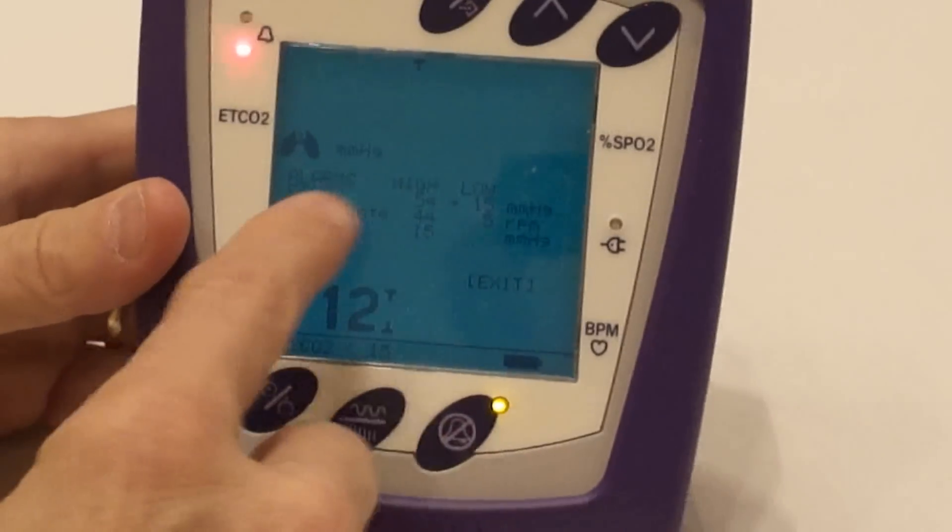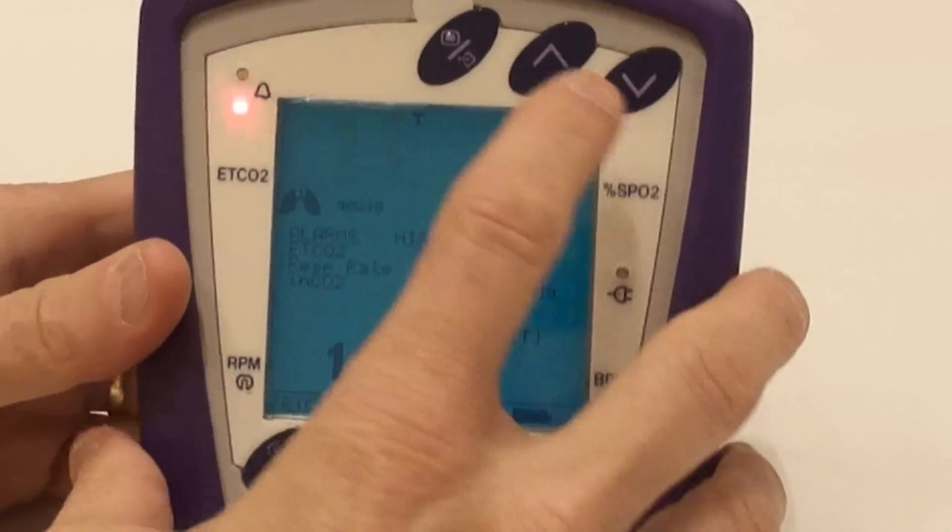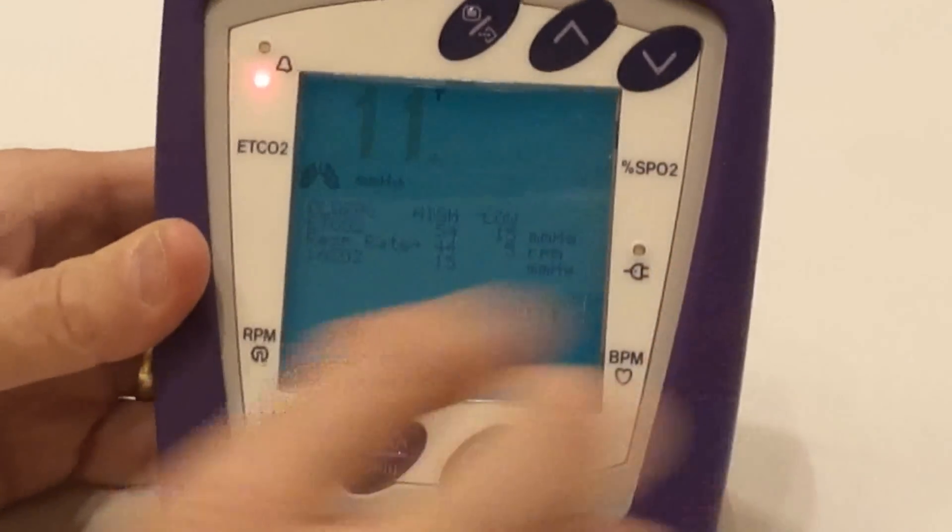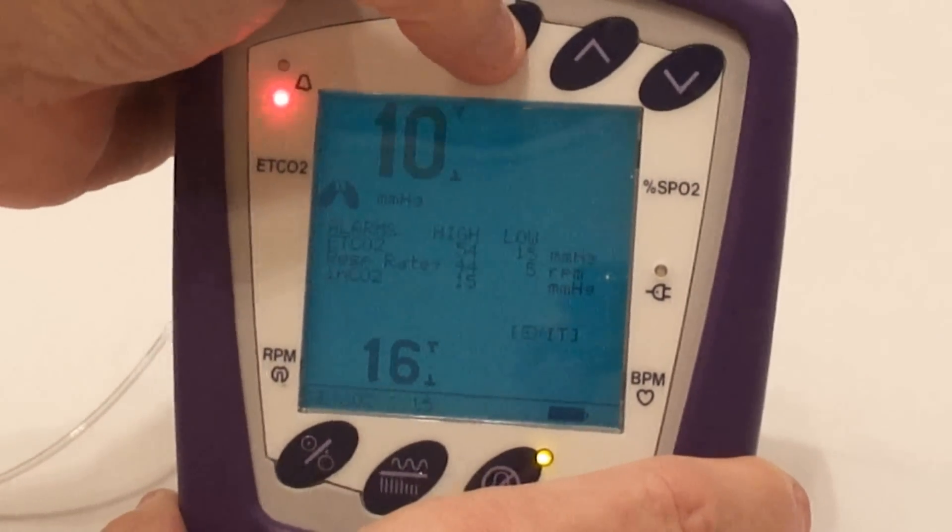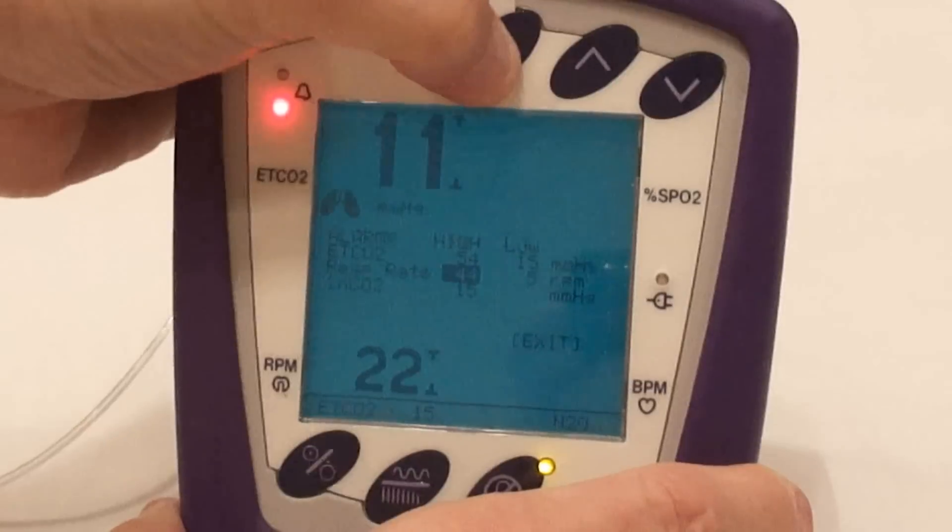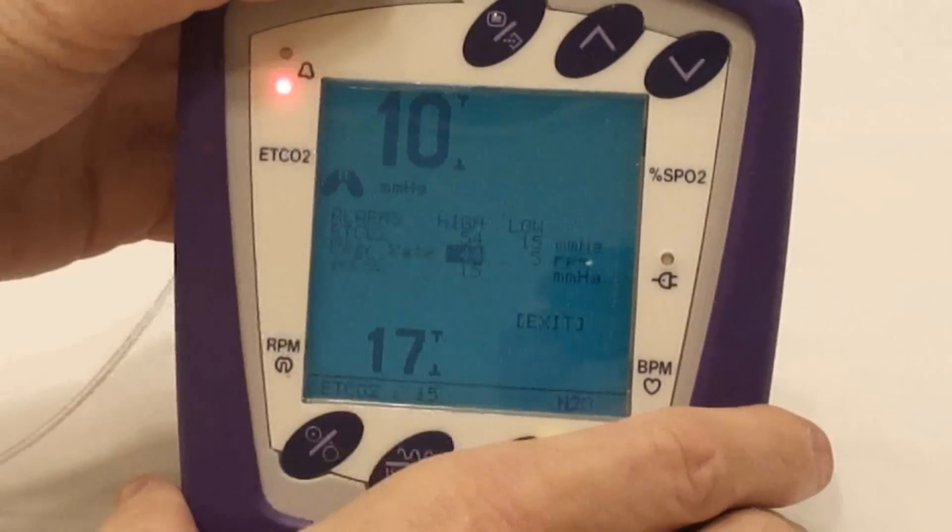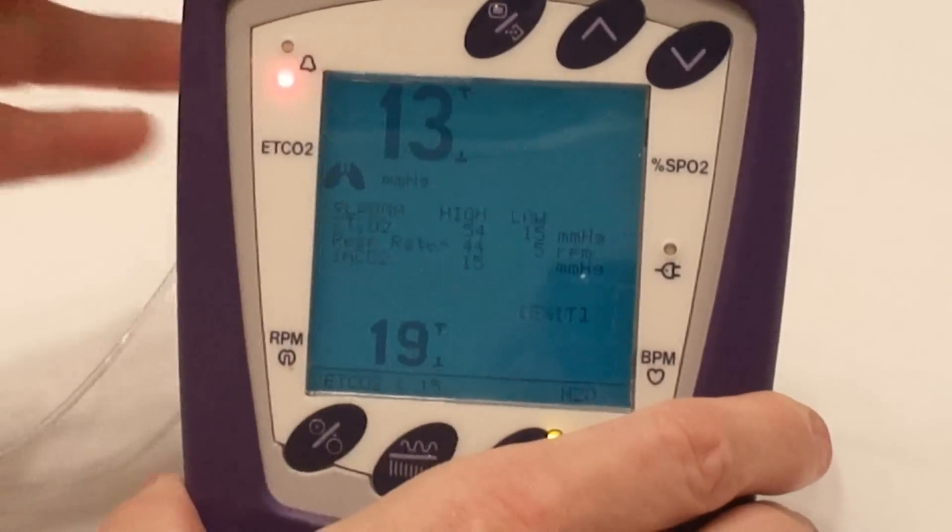Now we set the alarm settings for the end-tidal CO2. If we wanted to do respirations per minute, we would just go right down here to the next respiration rates per minute. Right now we've got the alarm set at 44. If we want to change that, we just press the menu button. Using the arrow key up or down, we can adjust it. Then once it's adjusted, press the menu button again and it's locked in.